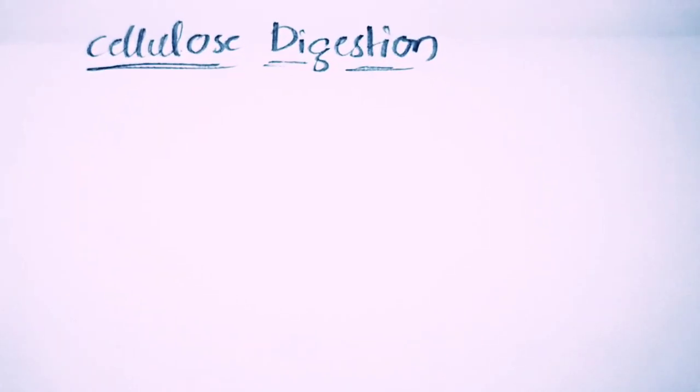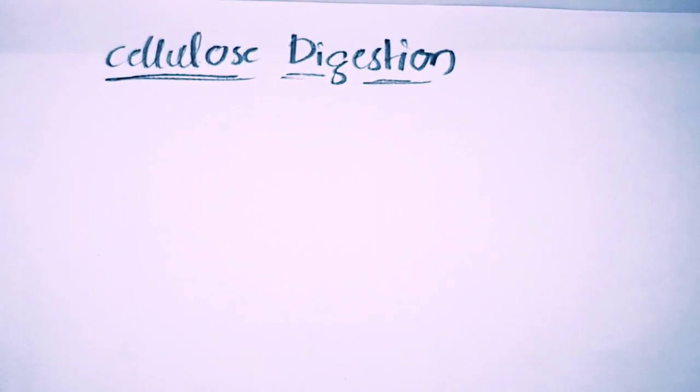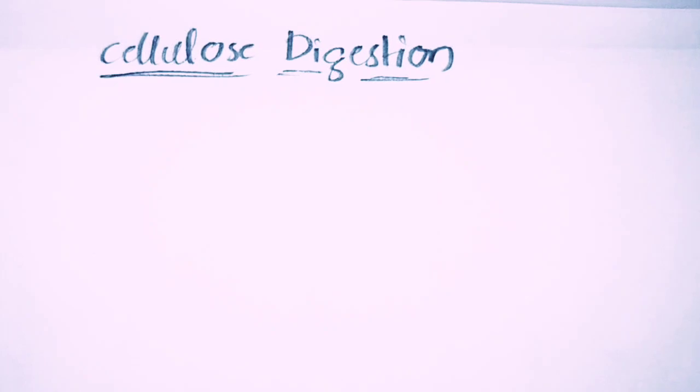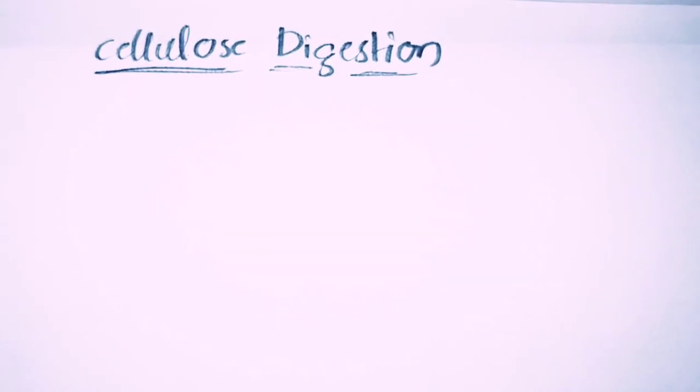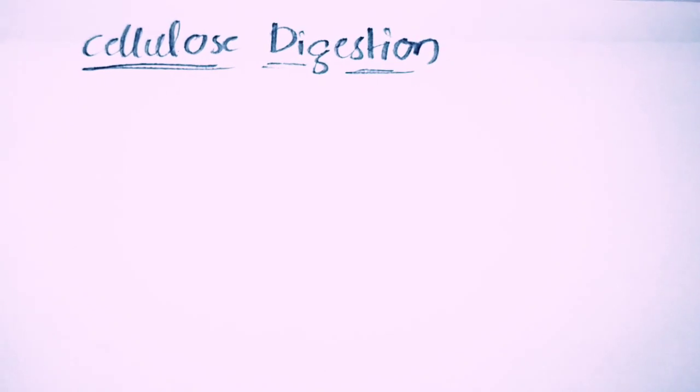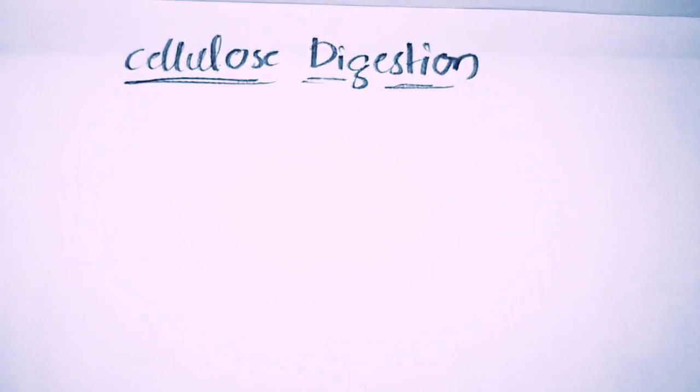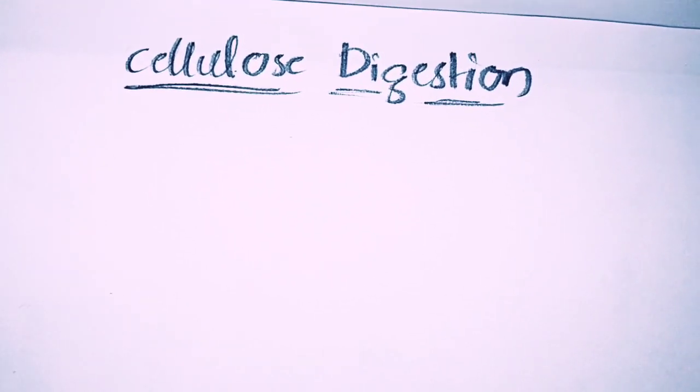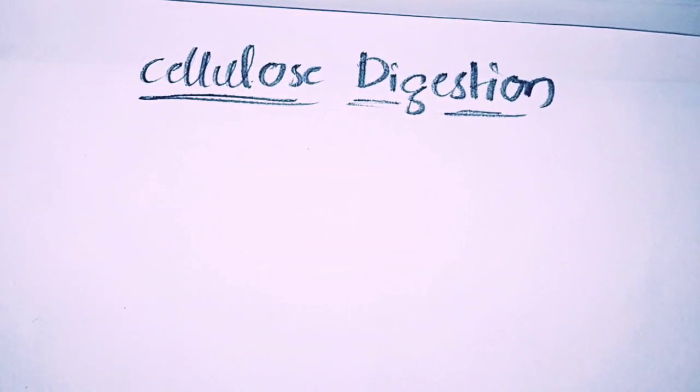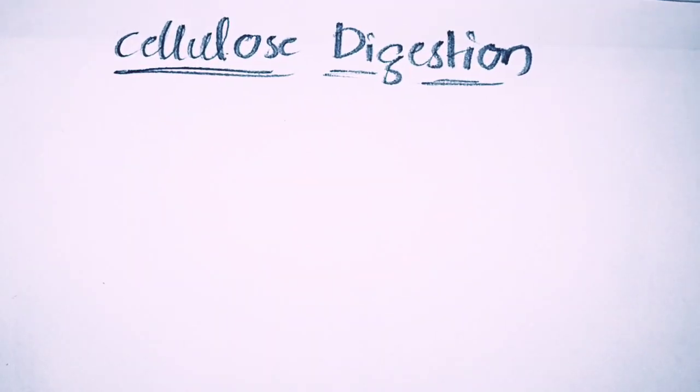Generally, animals don't possess a gene that is responsible for the production of cellulase enzyme. That is the reason animals have a complex digestive system for digestion of cellulose. Unlike other carbohydrates, cellulose cannot be digested that easily due to the absence of a gene responsible for the breakdown of cellulose in most organisms.